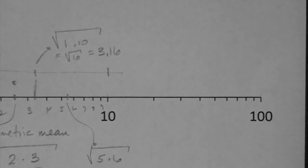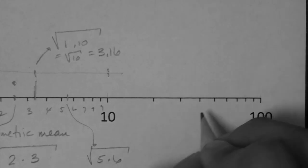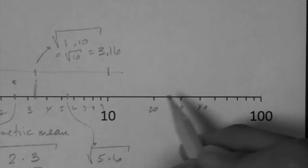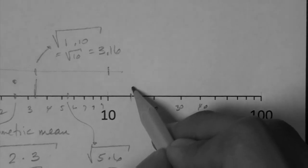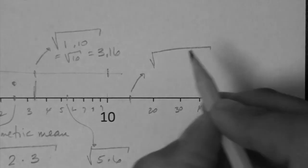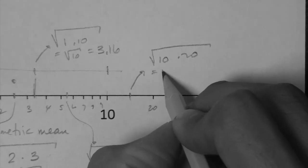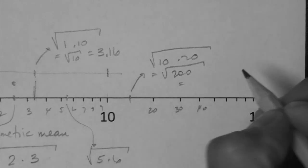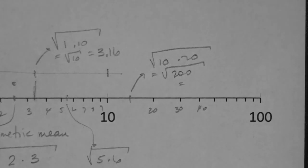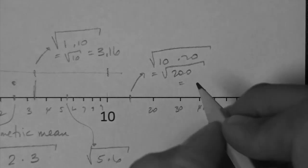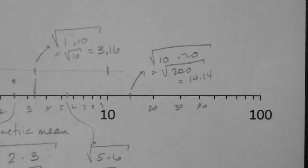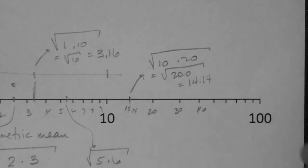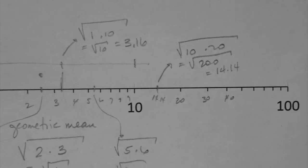That's how you proceed. We can do another example between, this is 20, 30, 40. Let's say right here between the 10 and the 20. The value is square root of 10 times 20, which is square root of 200, which is 14.14. That's the middle value.